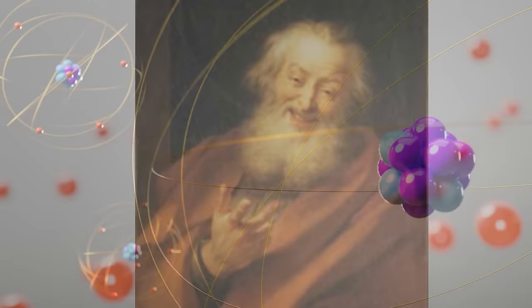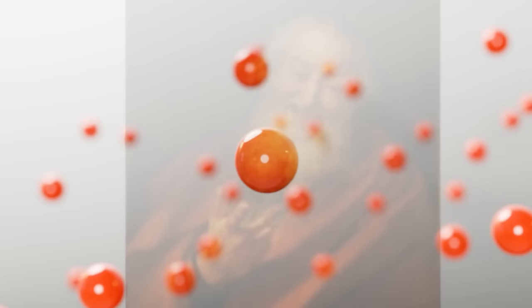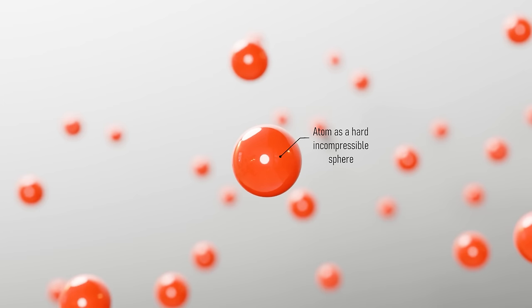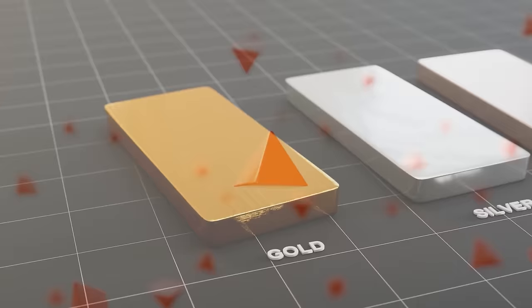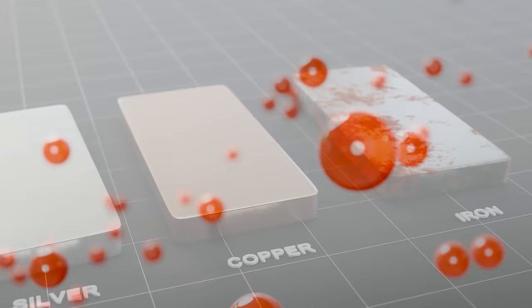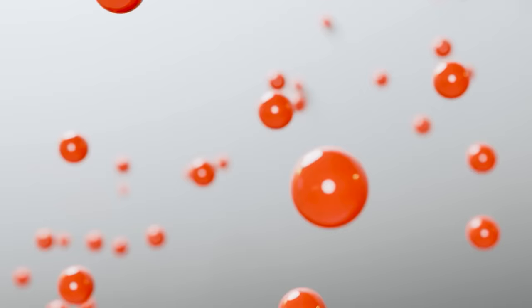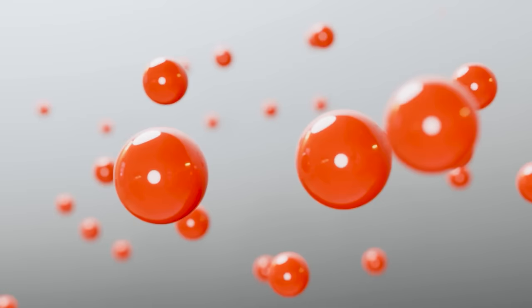The first description of an atom was given in 400 BC by the Greek philosopher Democritus. According to him, atoms are small, hard, incompressible particles. They are made up of a single material and could exist in different shapes and sizes. Democritus believed that the different physical and chemical properties of matter are due to the different shapes and sizes of atoms. He theorized that atoms are in constant motion and, upon collision, they stick to each other.